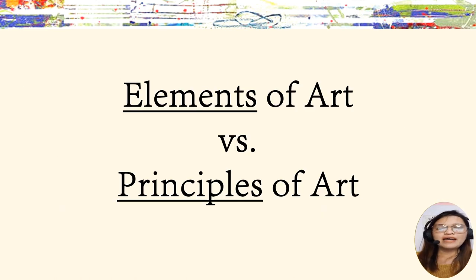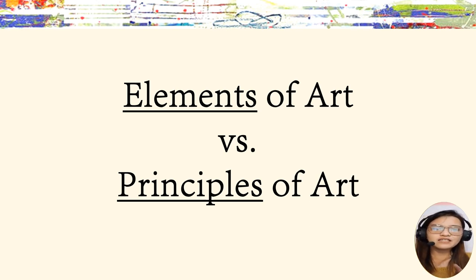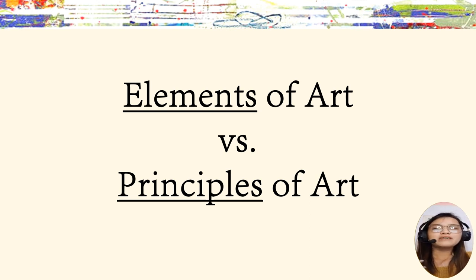Let us first define the elements of art. Those seven elements which you reported — line, shape, form, space, texture, value, and color — are the basic components of art making. It is impossible to create a work of art without using at least one of those seven elements. We can say that a quality art starts with its elements.